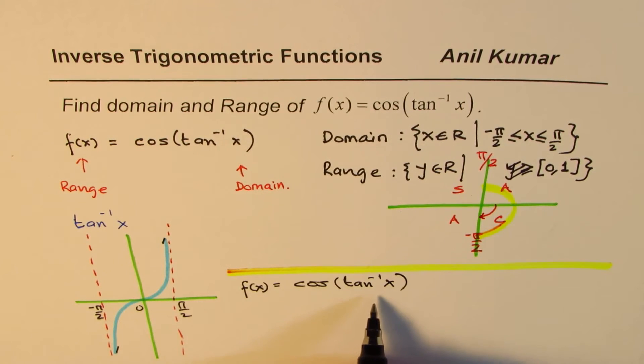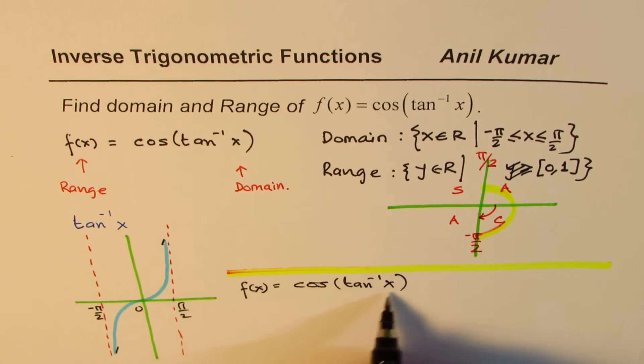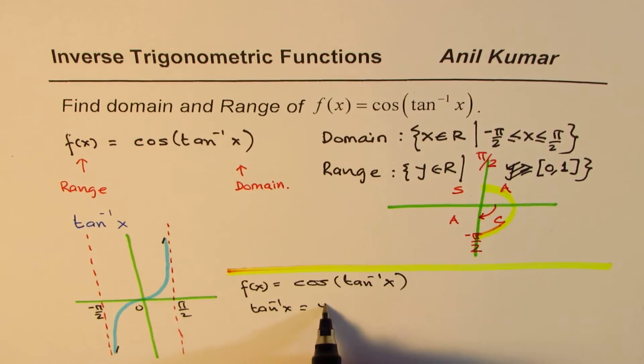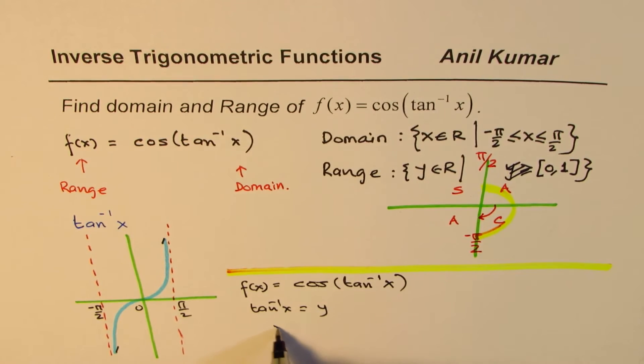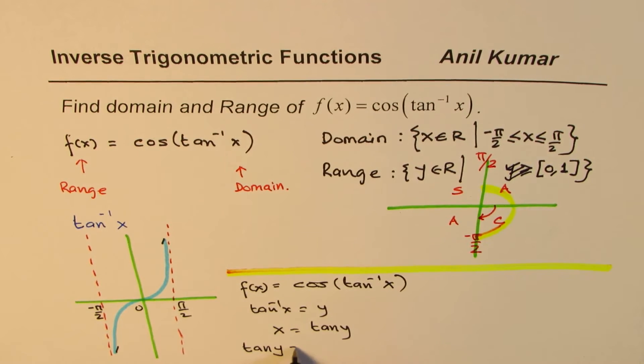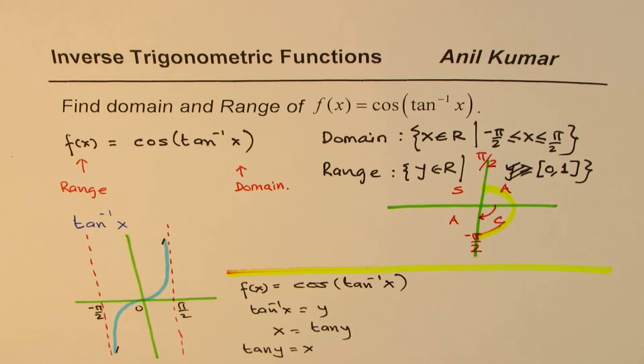We will again consider the function f(x) equals cos(tan⁻¹(x)). Normally, for solving any inverse function, we may take this inside function tan⁻¹(x) as equal to y. In that case, x is equal to tan(y). Now when I say x is tan(y), or either way, tan(y) equals to x, what does that mean?